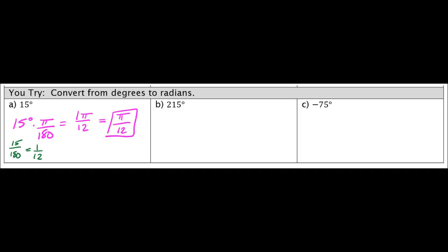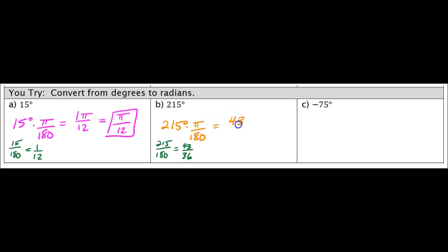Same thing with your second problem here. So we're going to take 215 degrees, we're going to multiply it by our conversion factor, which is pi over 180. In your calculator, you would put in 215 over 180, and when you reduce it, it's going to give you 43 over 36. So your final answer would be 43 pi over 36.